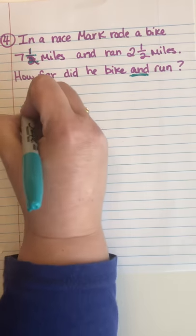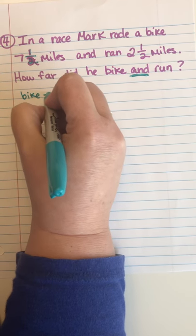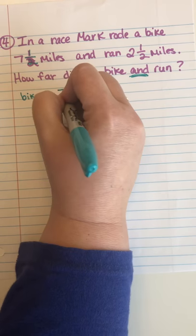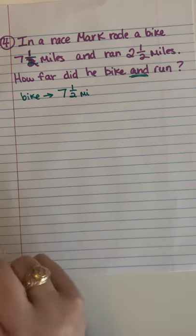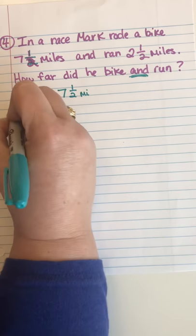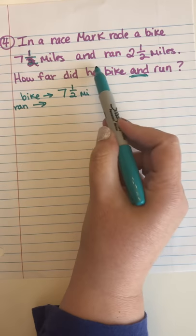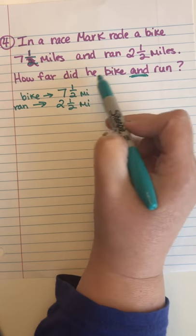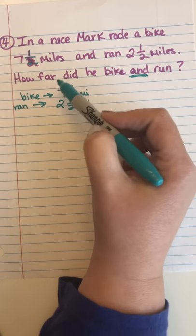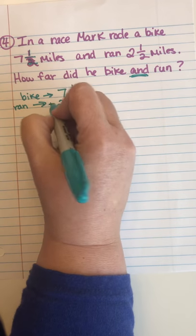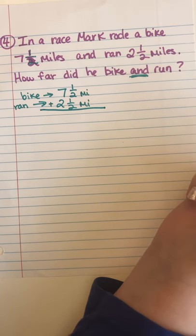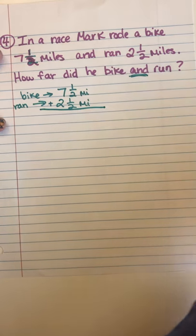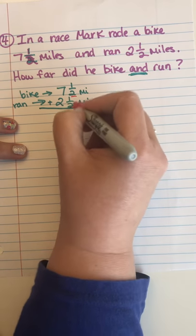I always like to write down what's given first in a word problem. How far did he bike? Seven and one half miles. And how far did he run? Two and a half miles. So I know I have to add these together. I already have it written vertically. I look to my denominators — both are twos, so I have a common denominator, and I'll bring that down.